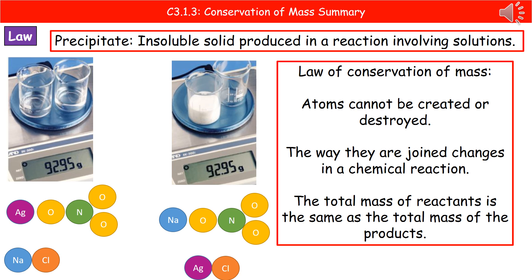So the number of atoms is exactly the same in our reactants on the left and in the products on the right. The only difference is how they're joined together.